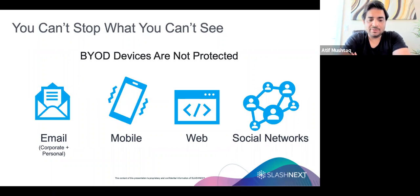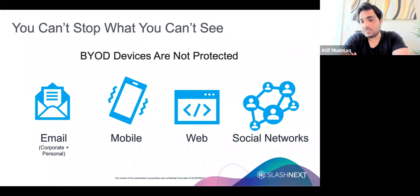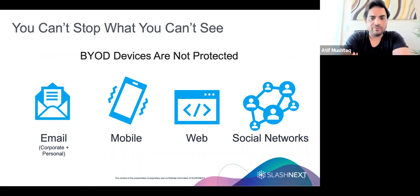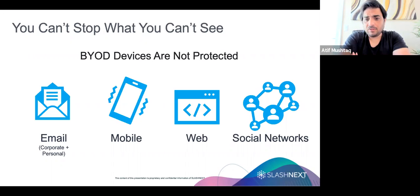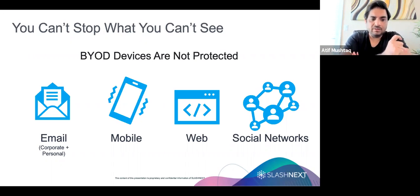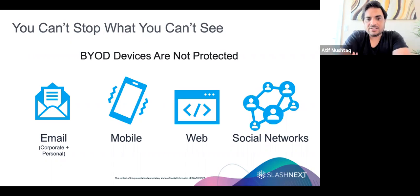If you look at personal email, mobile, web, and social network, there's pretty much no protection against advanced phishing attacks across these communication media. Even within corporate email, on average we're seeing a miss rate of approximately 10 to 12%. Most customers have pretty cutting-edge email gateways — Barracudas of the world, Mimecast of the world — but attacks are still getting through. There's a 10% gap in corporate email and a 100% gap when it comes to mobile, web, and social networks. If you combine all these communication mediums, you're simply not protected.